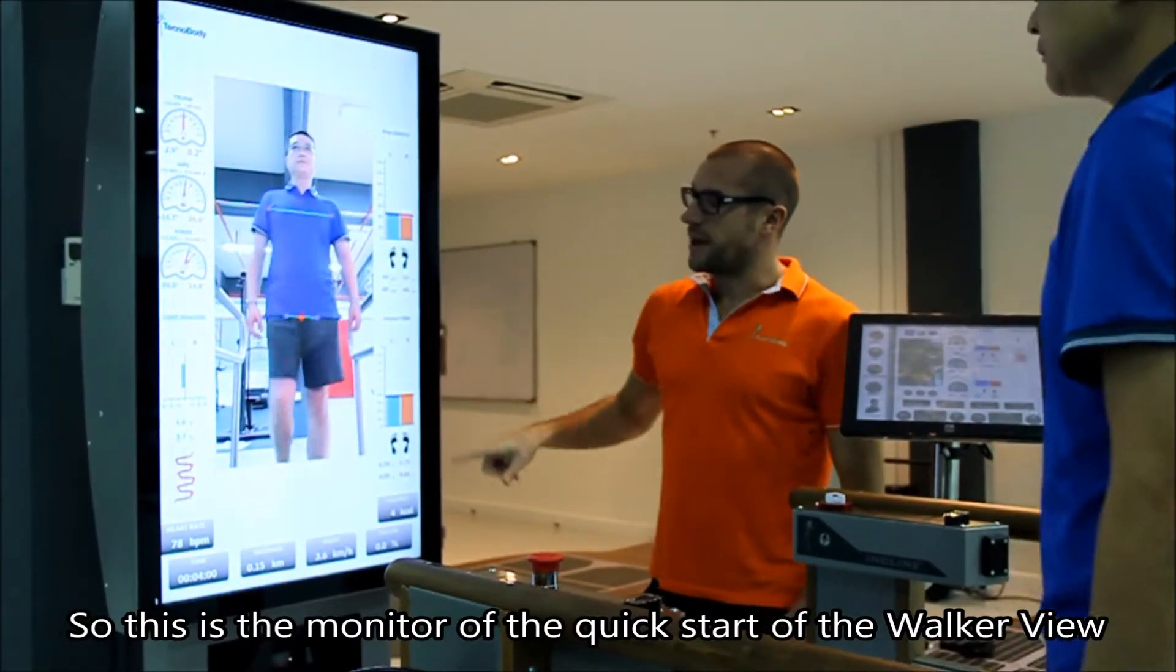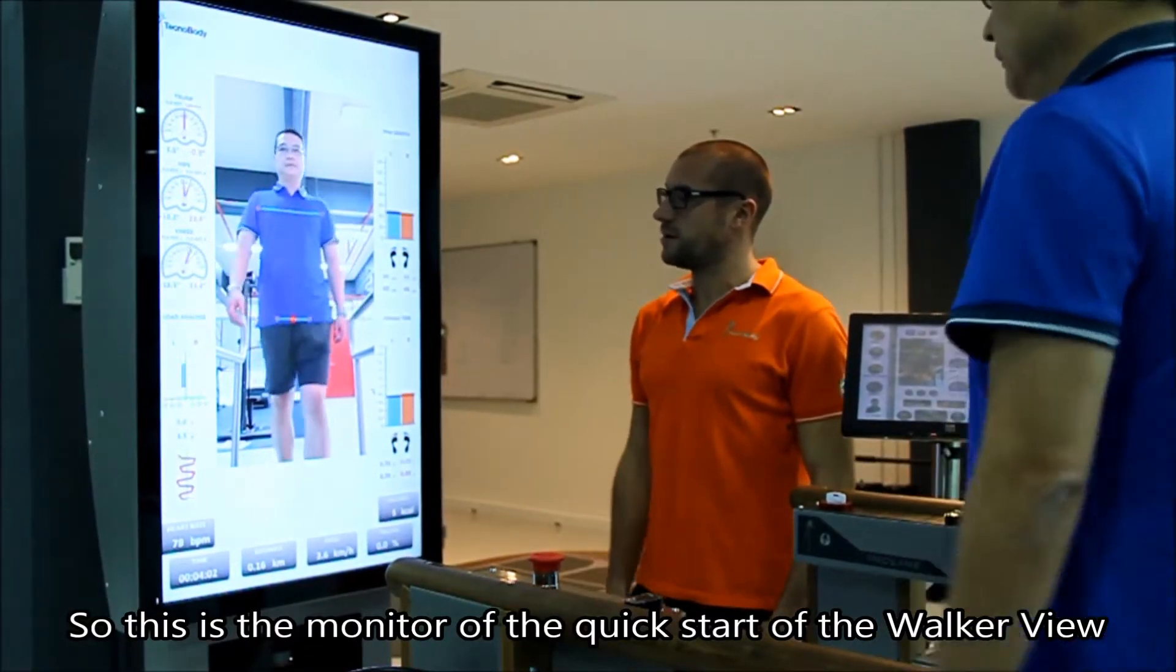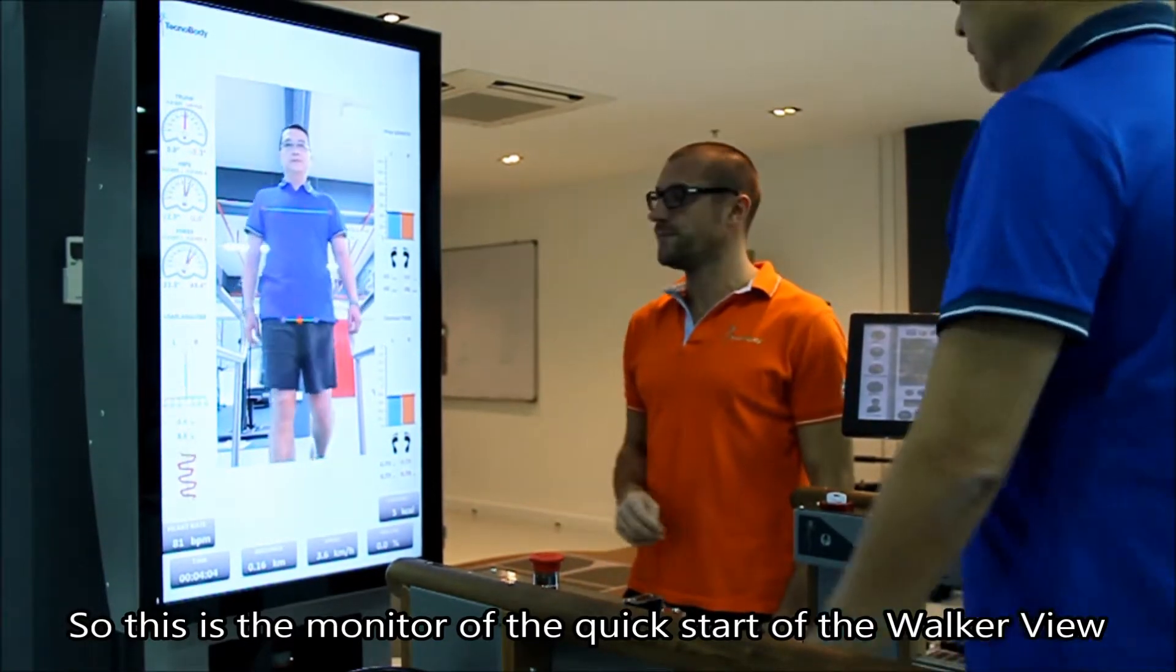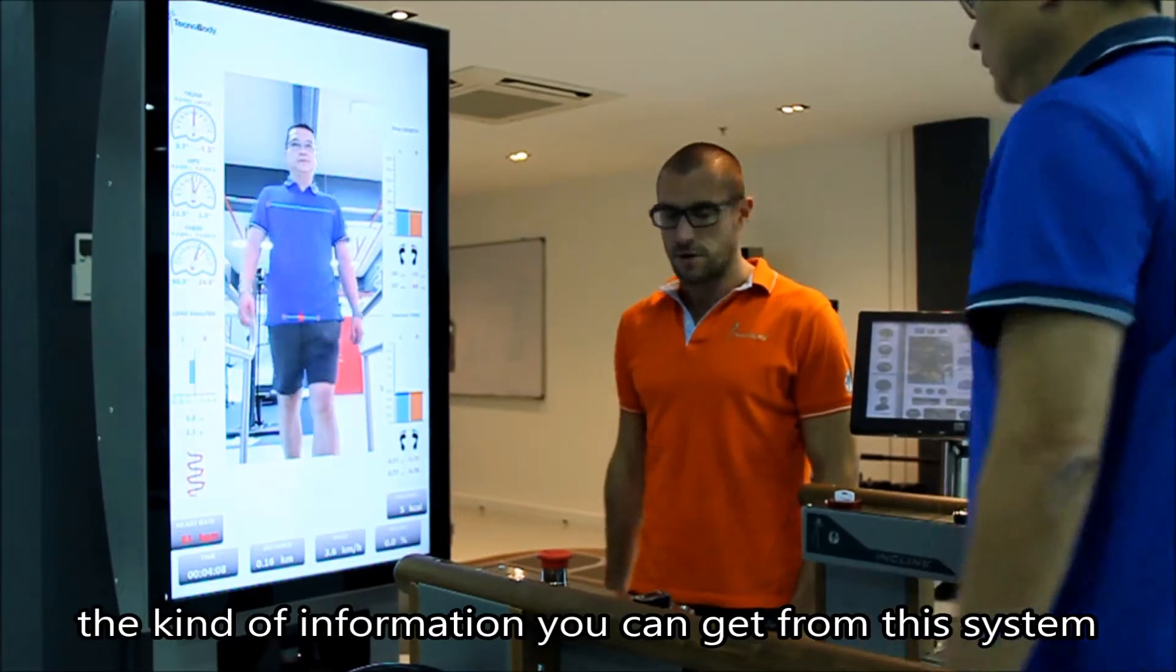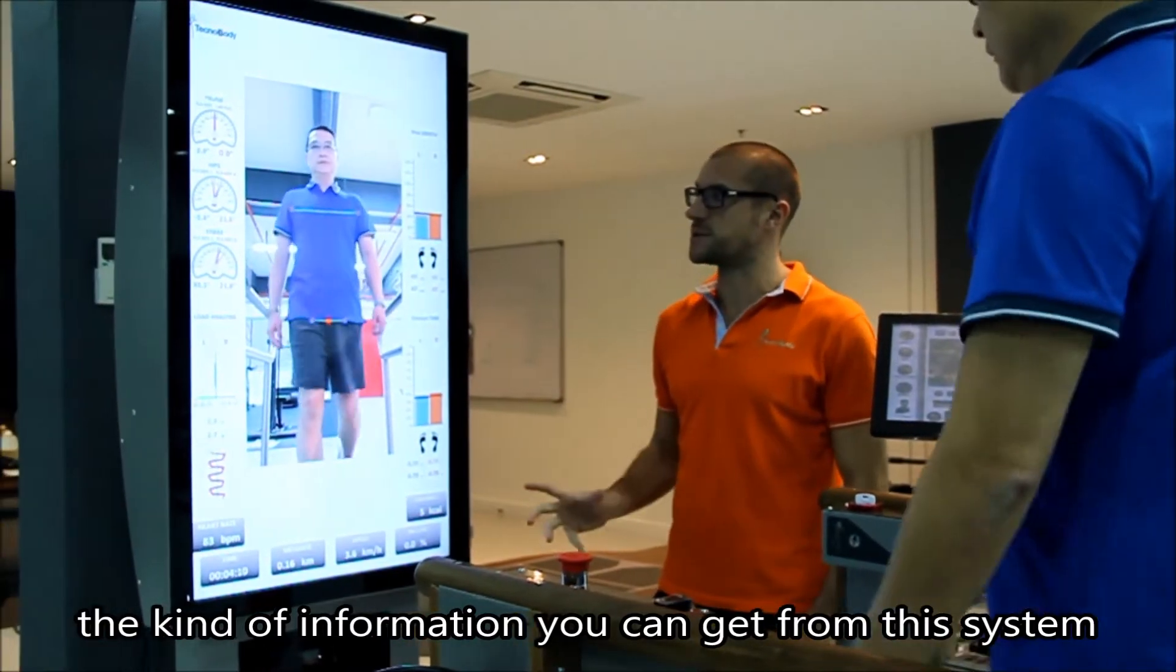So this is the monitor, the quick start of the gait view. Which kind of information we can get from this system?